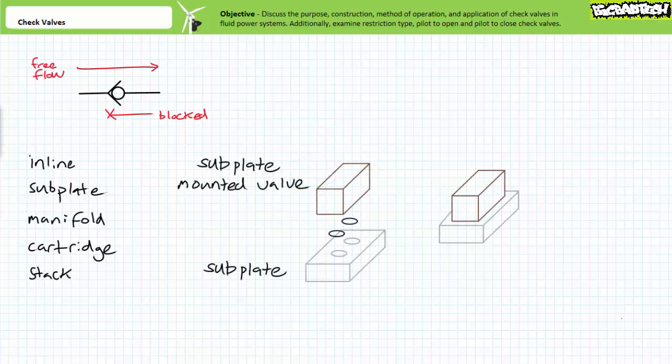In contrast, a subplate mounted valve uses a machined subplate directly attached to system plumbing, and the valve is then attached to the subplate with threaded connections. O-rings and/or gaskets prevent leaks between the matching valve and subplate ports. Standardized size of subplates and valves allow quick interchangeability.